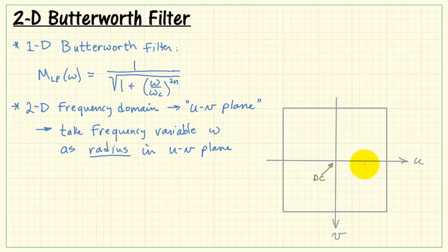So, for example, out here at this frequency location, let's call that the cutoff radius, R sub C, that would look like a circle. So we think of this circle as indicating the interior indicates our passband area, and the exterior indicates our stopband area.